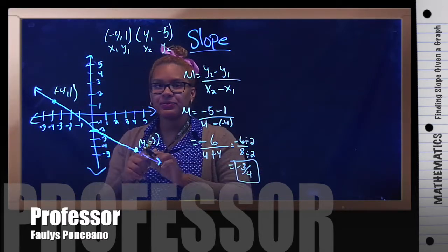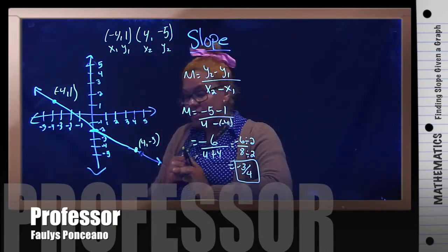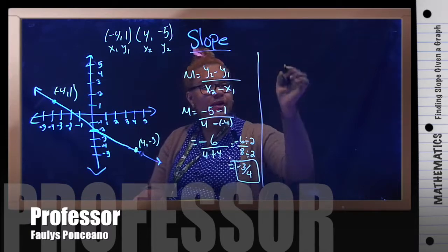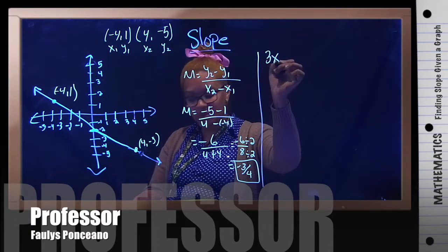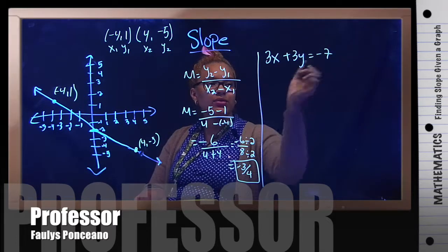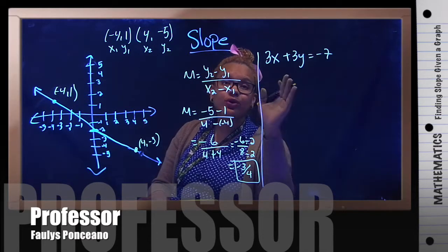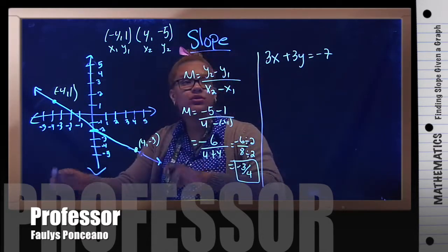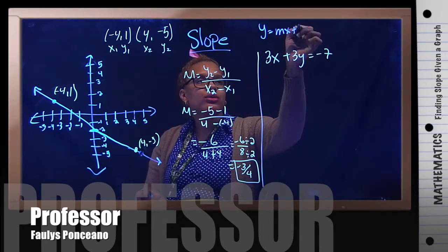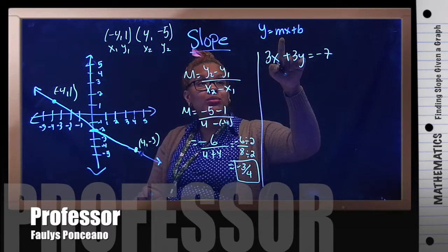Now we have another question where you're asked to find slope given an equation. The question says 3x plus 3y equals negative 7. I want you to rewrite this equation into slope-intercept form. Slope-intercept form looks like this: y equals mx plus b, where b is the y-intercept and m is the slope.